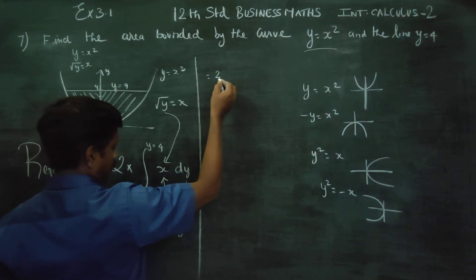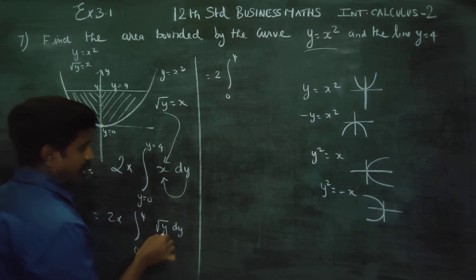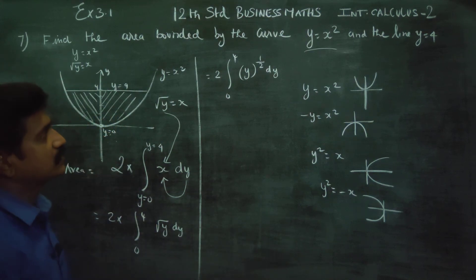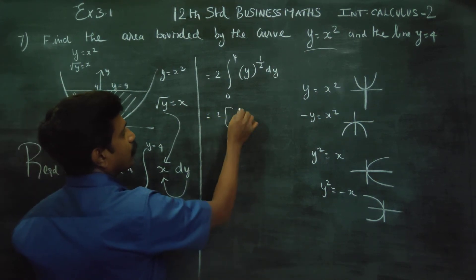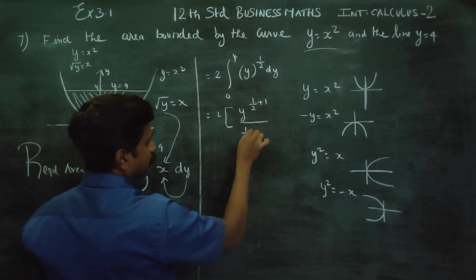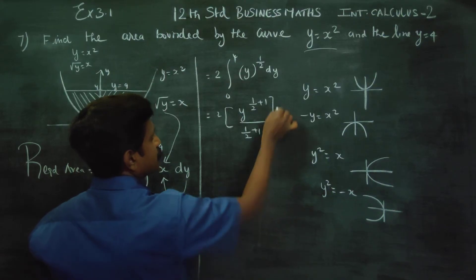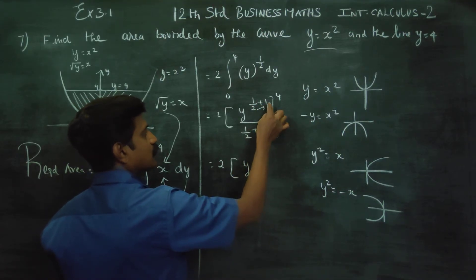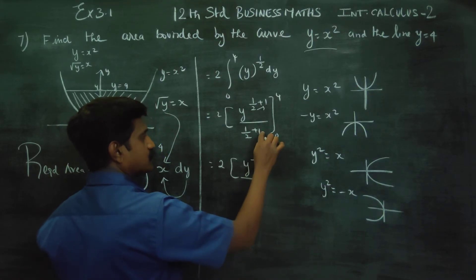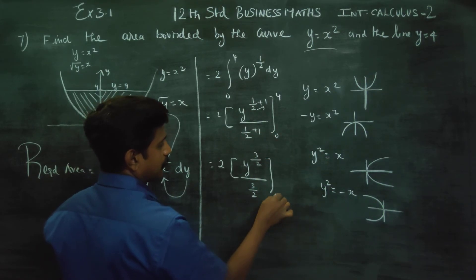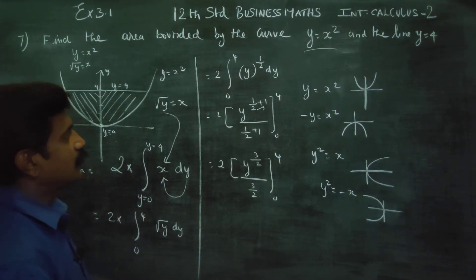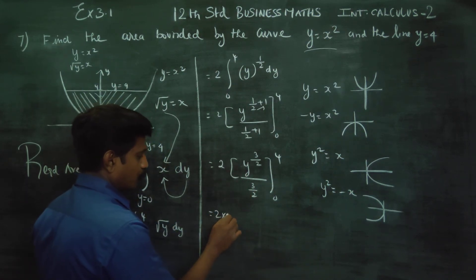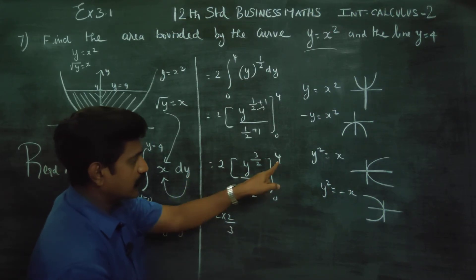2 into integration from 0 to 4. Square root of y can be written as y to the power half. Applying the power rule: 1 plus 1 is equal to y to the power 2 plus 1, which is 3 by 2. The reciprocal gives us 2 by 3, with limits 0 to 4.